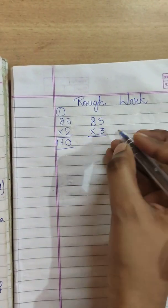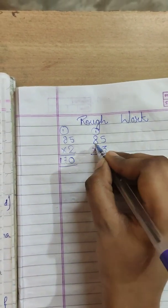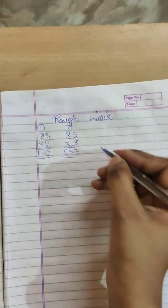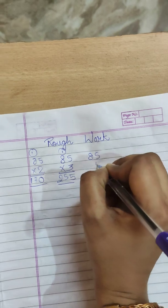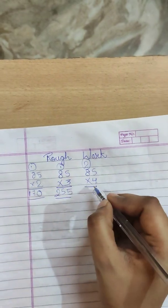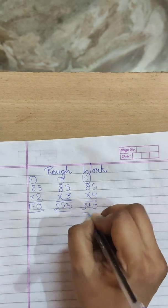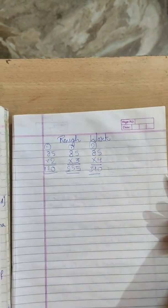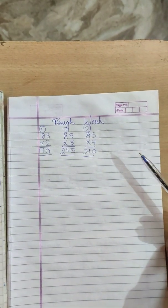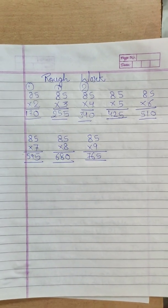Now 85 threes are. 3 fives are 15, 5 here, 1 carry. 3 eights are 24, or 8 threes are 24, plus 1, so 25. So 85 threes are. Now 85 fours are. 4 fives are 20, so 0, 2 carry. 8 fours are 32, plus 2, so it's 34. We can make the complete table of 85. So it's your chance now. Do it in your rough notebook on your own.